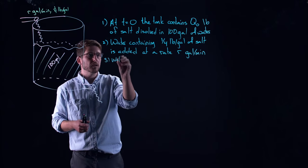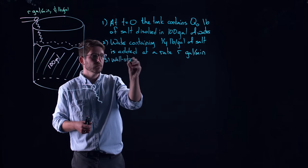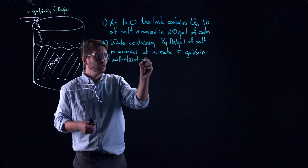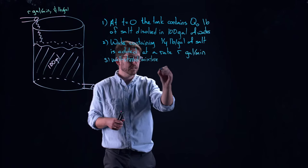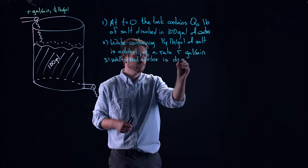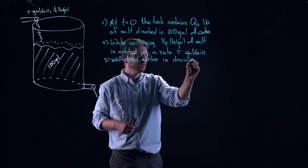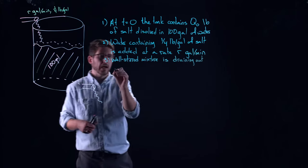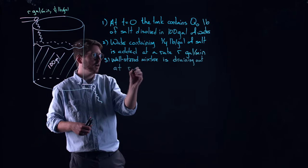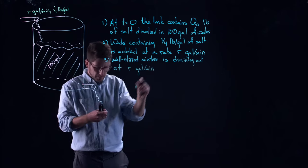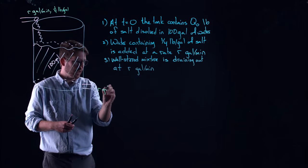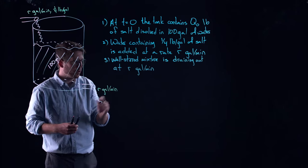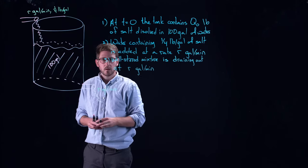And the third thing that we can say about this is about the water going out. So there's a well stirred mixture. So I'll explain that in a moment and it's draining out at the same rate at R gallons per minute. So that means that water is coming out of this spout similarly at R gallons per minute.